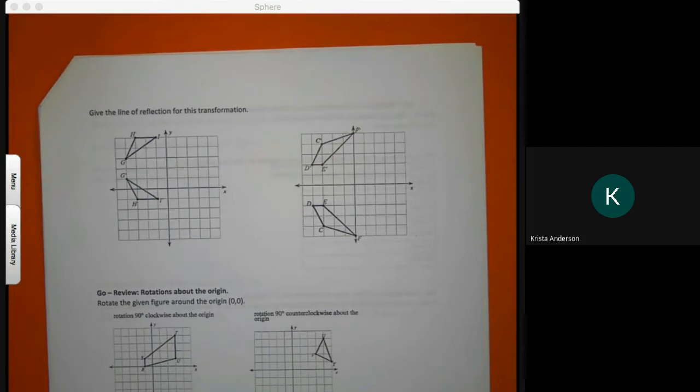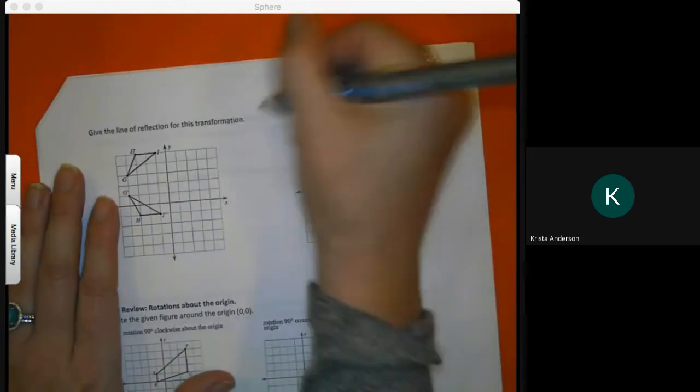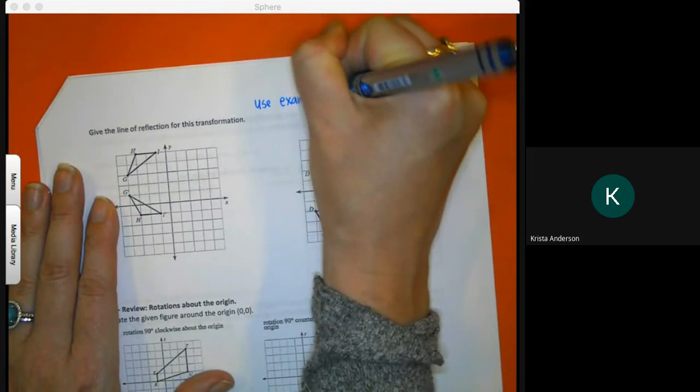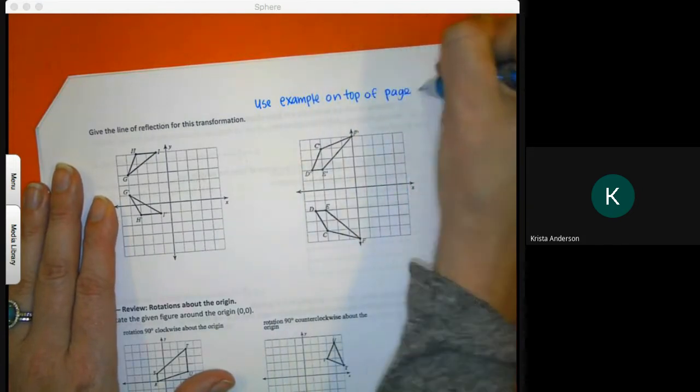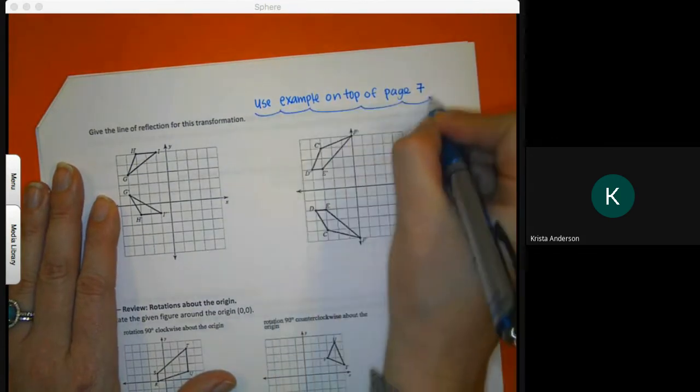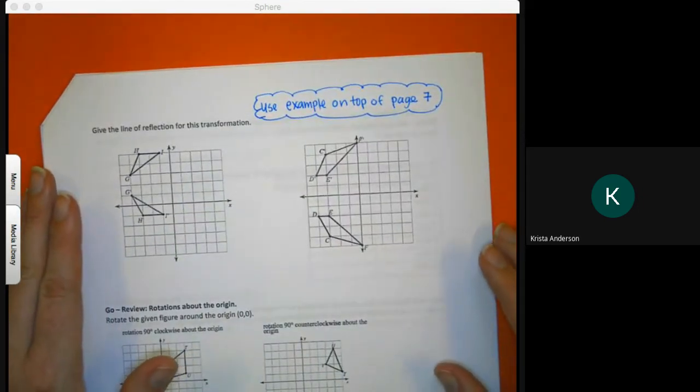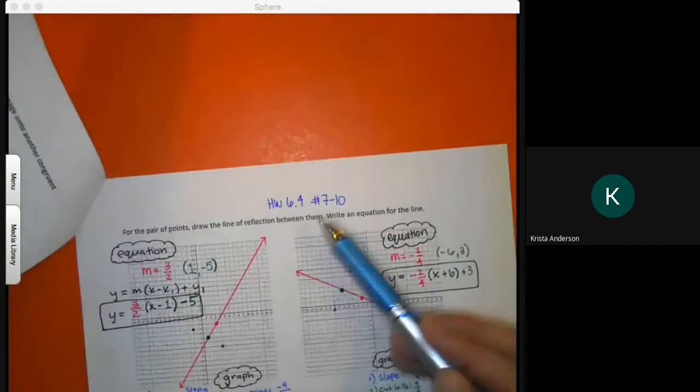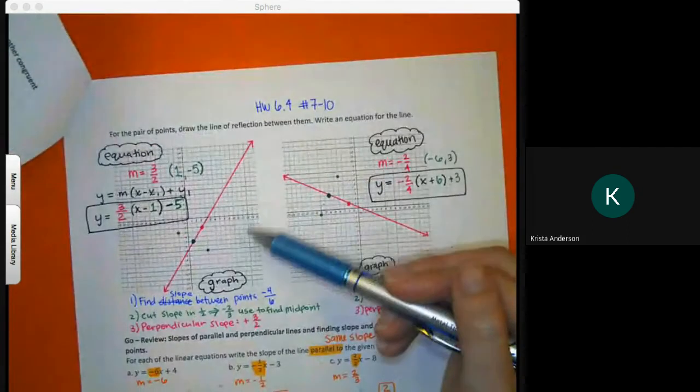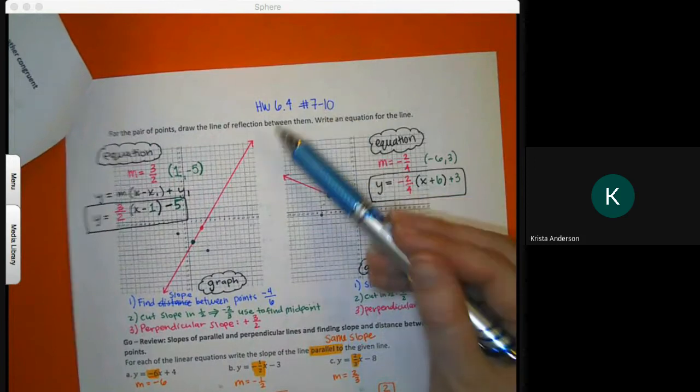When we are trying to find the line of reflection, I'm going to make a note that there will be some like yesterday's. So on yesterday's assignment, if you need to, finding the line of reflection was this one. So if you want to refer back to it, you can.